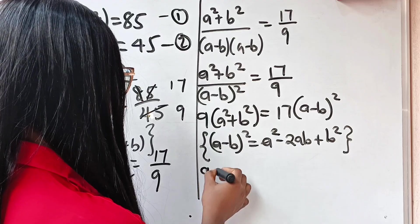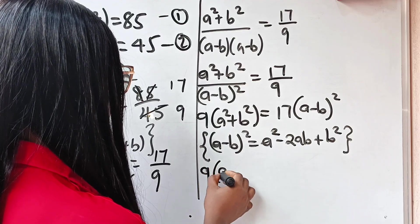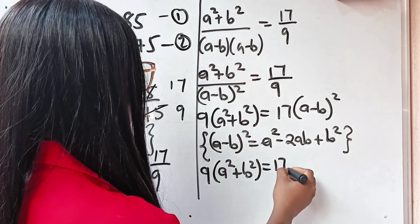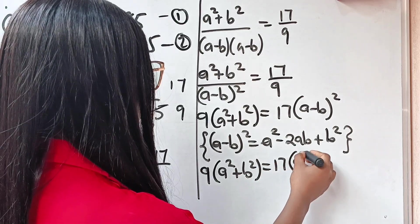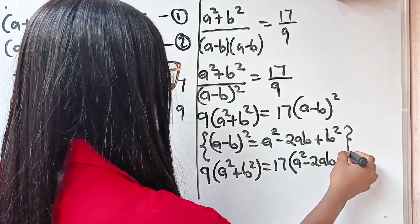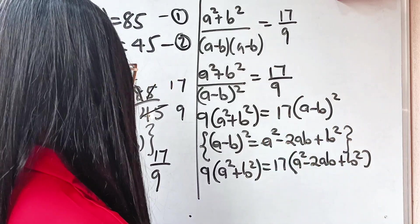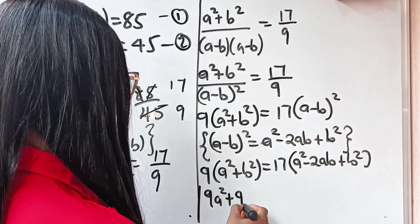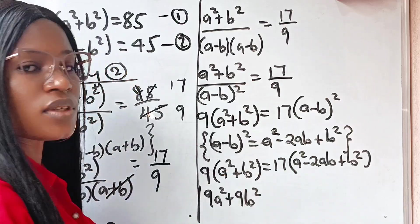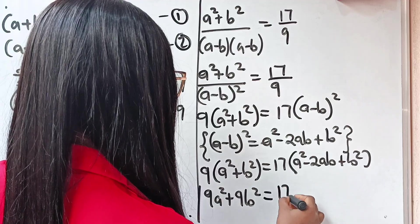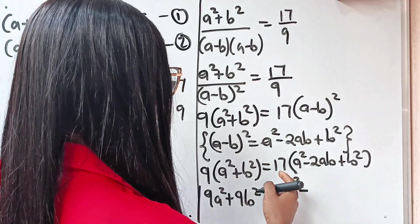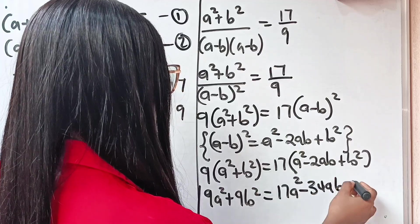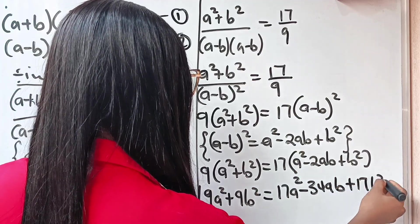So that means this is: nine brackets a squared plus b squared is equal to 17 brackets a squared minus 2ab plus b squared. If we open the brackets we have 9a squared plus 9b squared is equal to 17a squared minus 34ab plus 17b squared.